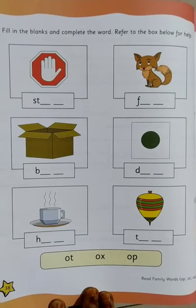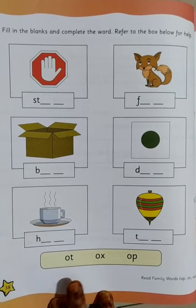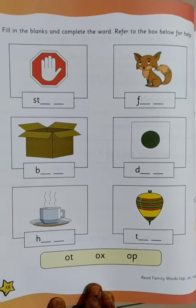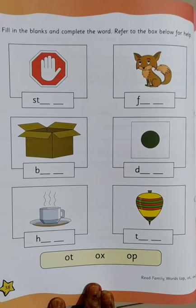Can you see a few pictures? We have to complete the right word. For example: ot, ox, and op. Can you see ot, ox, and op?